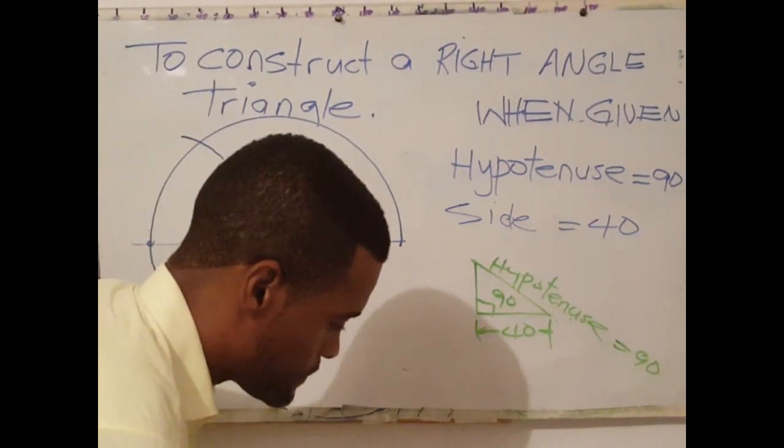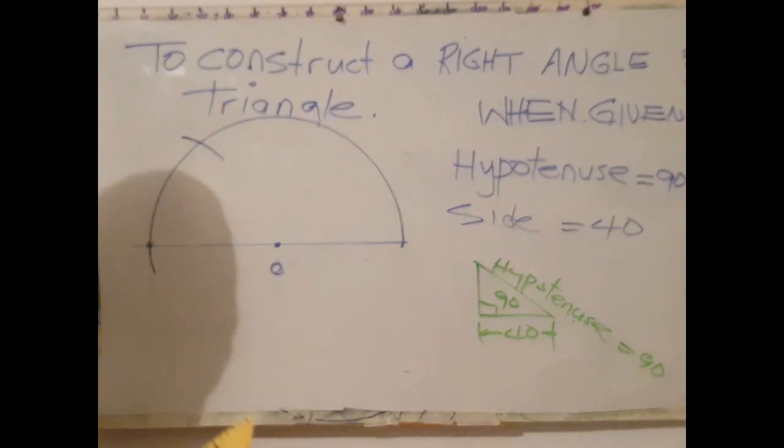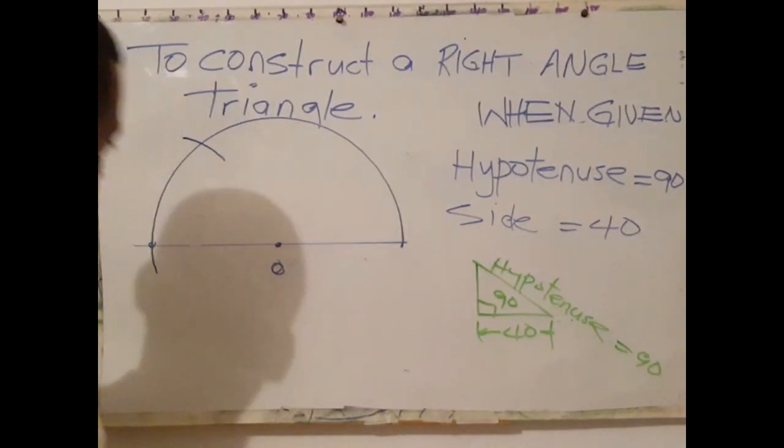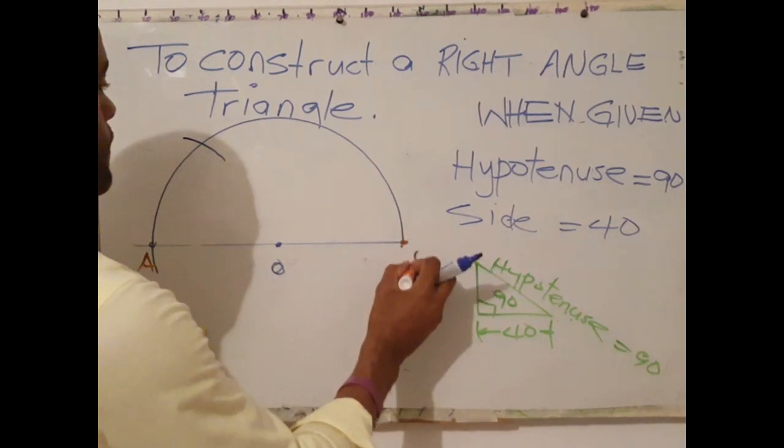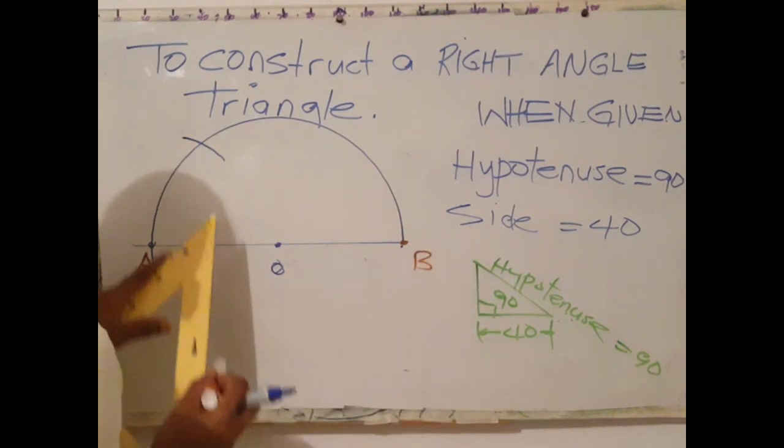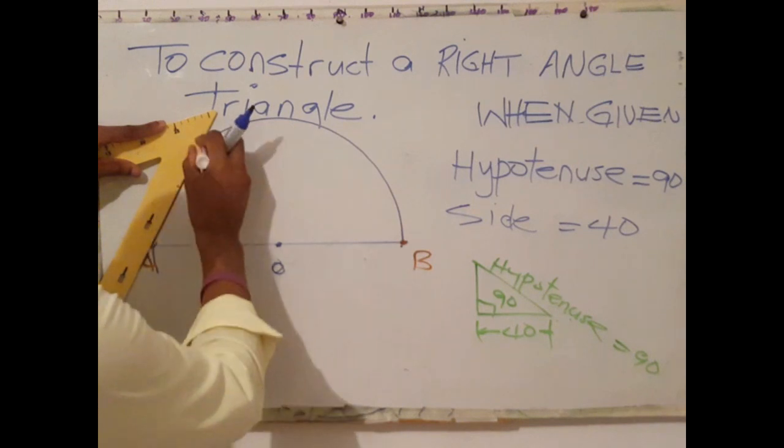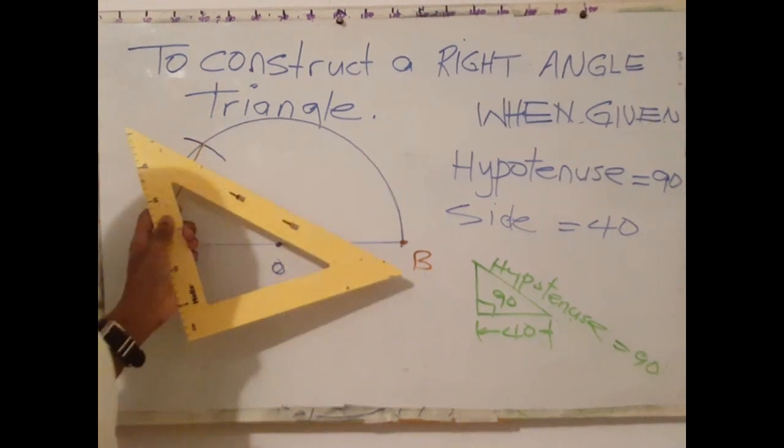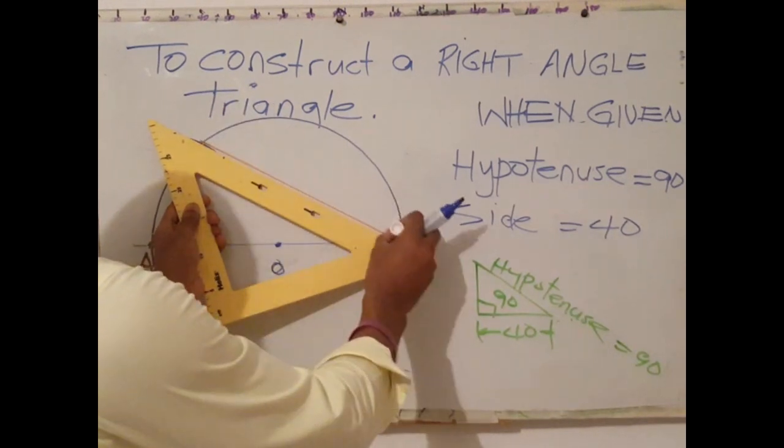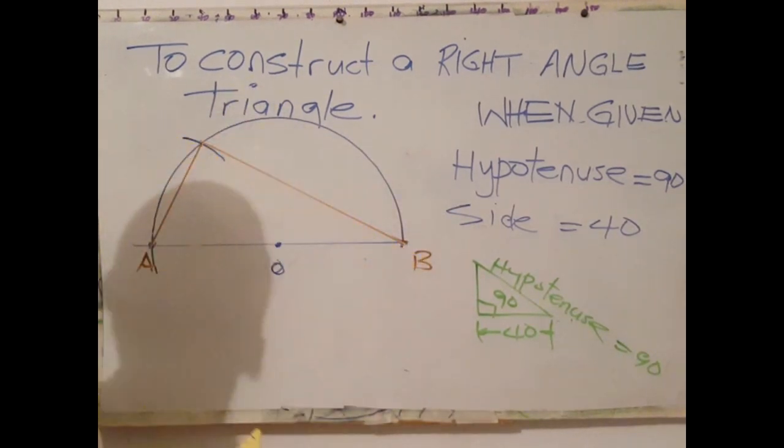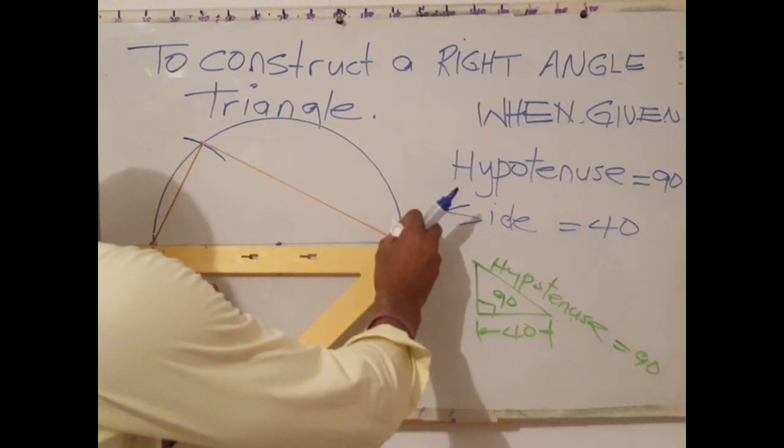The next step is to join from one point. You could label these A and B. The next step is to join this point to the point where the arc meets the semicircle. Then from B to the point above. And there we go. We have a triangle.